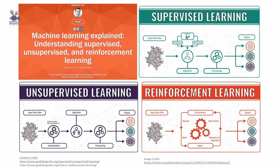Supervised learning — as the name indicates, there is the presence of a supervisor as a teacher. Basically, supervised learning is learning in which we teach or train the machine using data that is well-labeled, meaning some data is already tagged with the correct answer. After that, the machine is provided with a new set of examples or data, so that the supervised learning algorithm analyzes the training data and produces a correct outcome from the labeled data.